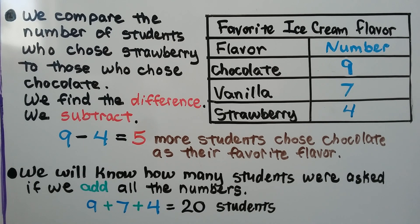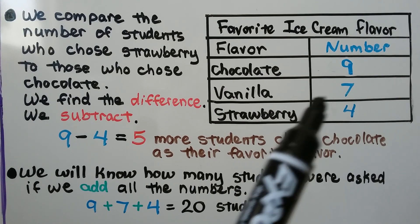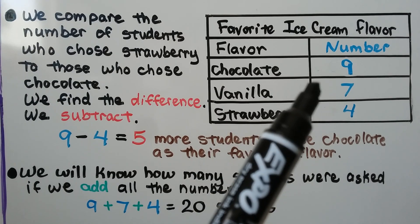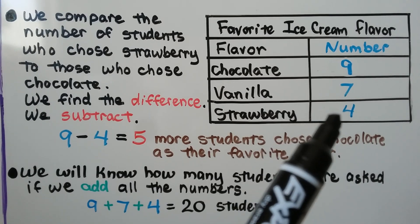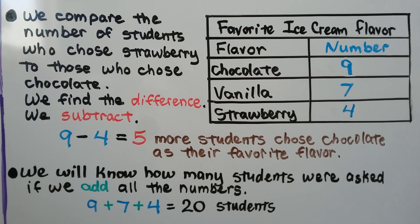We counted the tally marks and wrote them into the frequency table. Chocolate was nine, vanilla was seven, and strawberry was four — because a frequency table uses numbers while the tally table uses tally marks. We compare the number of students who chose strawberry to those who chose chocolate, and to find the difference we subtract. Chocolate was nine, strawberry was four, and nine minus four equals five. So five more students chose chocolate as their favorite flavor.